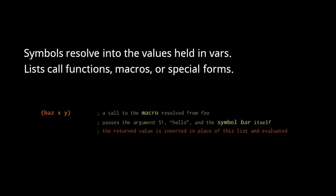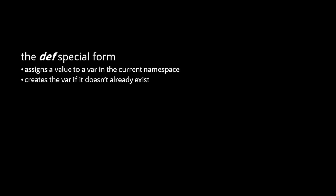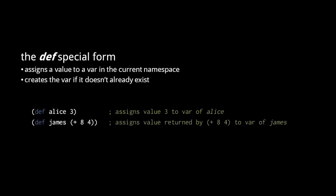When the symbol at the start of a list doesn't resolve to a var, the evaluator checks if it matches one of the 16 special form names. If so, the list is evaluated with the rules unique to that special form. The special form def creates and modifies var mappings in the current namespace. If the current namespace has no var mapped to the symbol Alice, this def form will create the var and give it the value 3; otherwise, it modifies the existing var. Here, we store the result of a function call — the call to plus returns the value 12, which is stored by def in the var mapped to the symbol James. The evaluator always works outside in, so the def form is evaluated first before the call to plus, but a def form in turn evaluates its enclosed expression because it needs the return value.